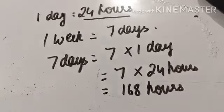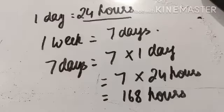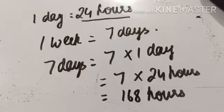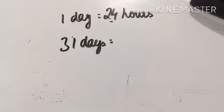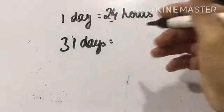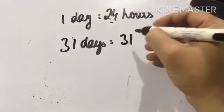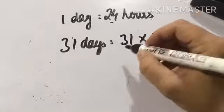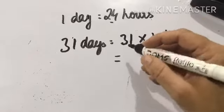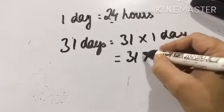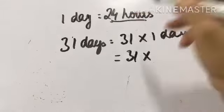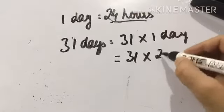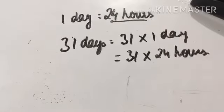So this is one week's value in number of hours — 168 hours. What is the next one? One day's value in hours is twenty-four hours.